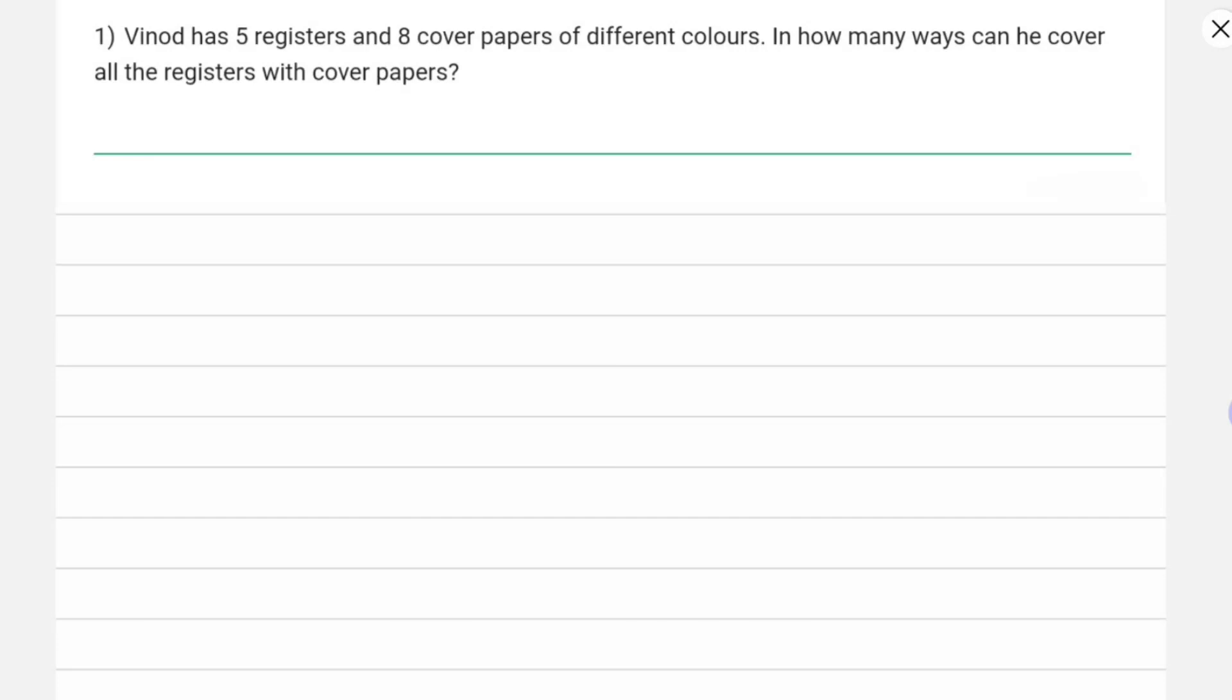So our first question for statistics assignment 5 is: Vinod has 5 registers and 8 cover papers of different colors. In how many ways can he cover all the registers with cover papers? This one is quite easy.